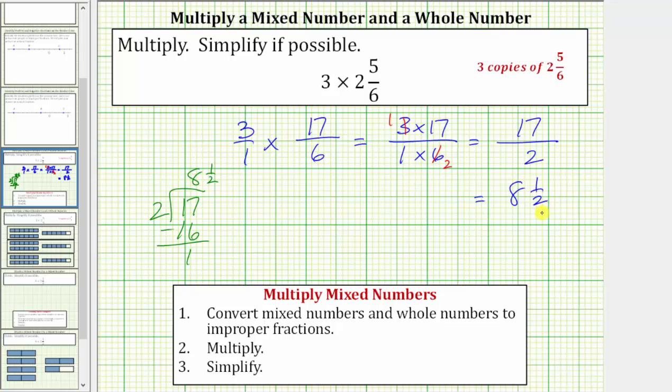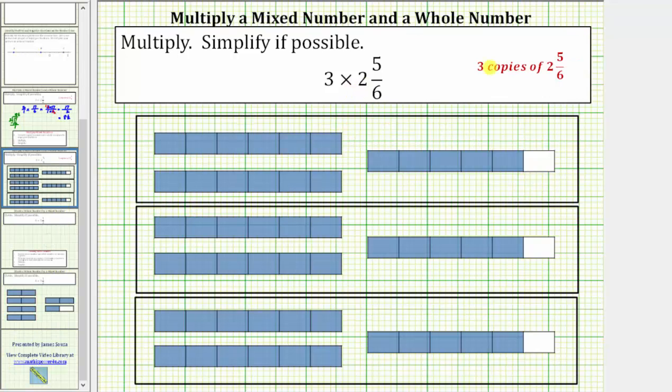And now let's take a look at a model for this product to better understand why the product equals 8 and a half. Again, viewing this product as three copies or three groups of 2 and 5/6, we would have the model shown below. Notice where if the rectangle is one unit, here we have one copy of 2 and 5/6, two copies, and three copies.